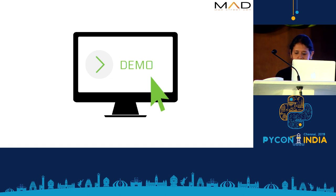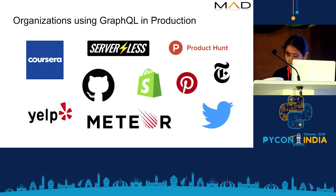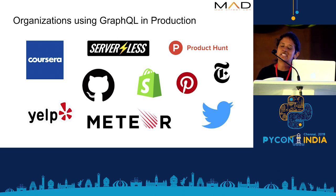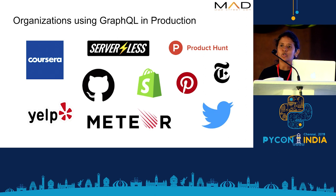A lot of organizations use GraphQL in production: Twitter, Shopify, Coursera, Yelp — many organizations are using this in their production systems and even exposing it as public APIs. Does this mean REST no longer has purpose? The answer is no — REST is here to stay. GraphQL is very powerful in many ways and provides a lot of control to the client, especially in today's world where we want faster product iterations and development cycles and are building mobile applications. GraphQL is also here to stay.